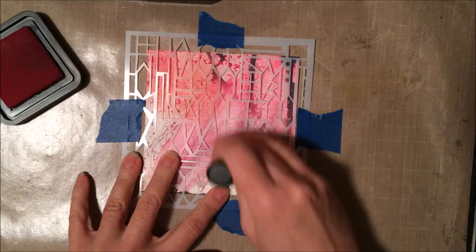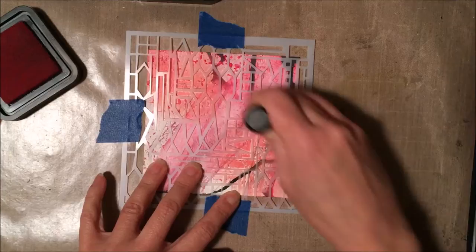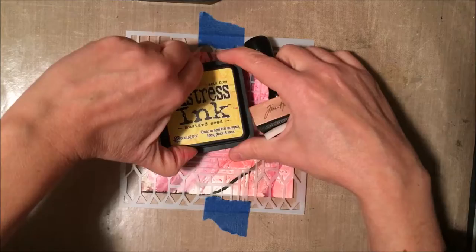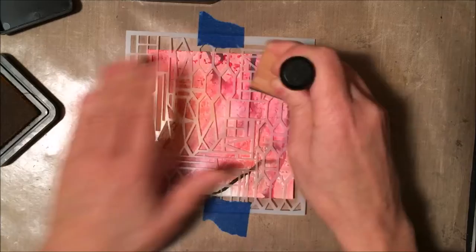So I'm just using some distress inks. And I've got a pink, I think it's picked raspberry, and a yellow and an orange, rusty hinge. I'll put the colors down in the description. And I am, oh, mustard seed was my yellow. And I'm just rubbing those colors through the stencil.